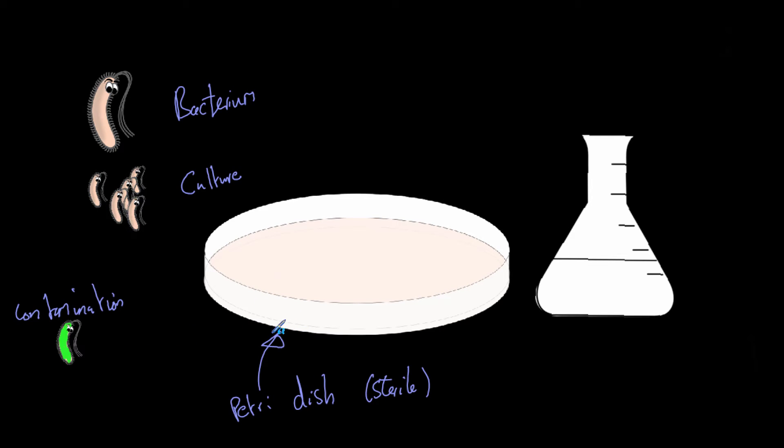Now this orange stuff here is agar, or agar jelly as it's often called. The agar jelly is what's known as the growth medium. That basically means it is a substance which almost acts like the food for the bacteria. We put the bacteria onto the growth medium, and they can grow because it's full of nutrients which they need to survive. If we didn't have enough nutrients in there, they would eventually die.